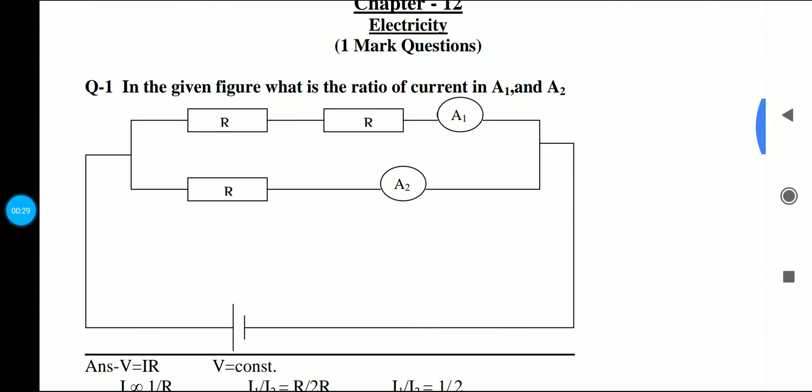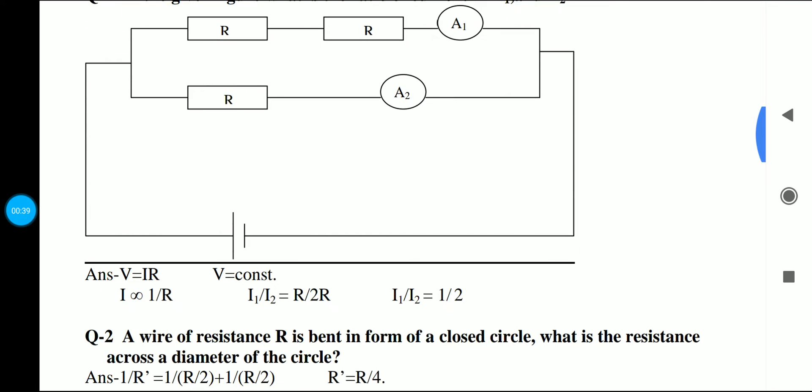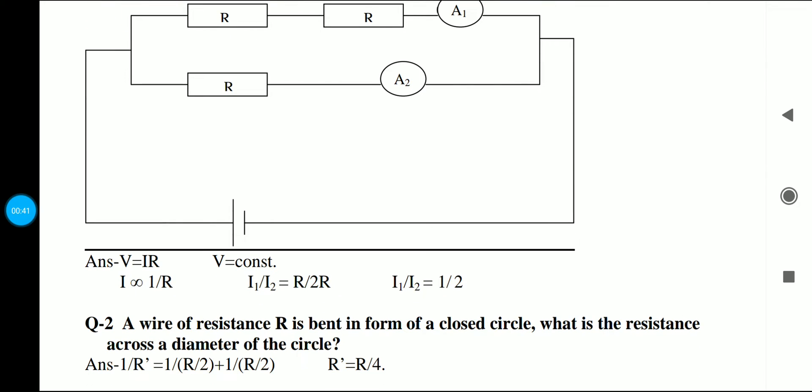First of all, we have a figure in the 1 mark questions and we will find the current ratio in A1 and A2. Here we have a formula that V is equal to IR and the potential difference is constant, but the I is inversely proportional to R. Since V is constant, how do we find the current?